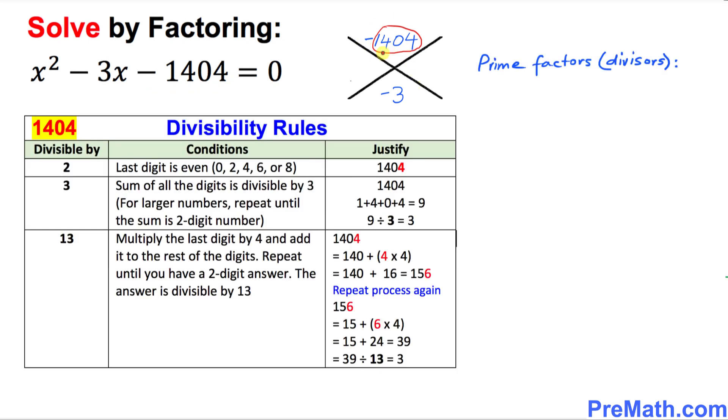As we can see, this number 1404 has prime factors or divisors: 2, 3, and 13. We can figure it out easily. I have given you the divisibility rule and chart. 1404 can be easily divisible by 2, 3, and 13. You can check it out.